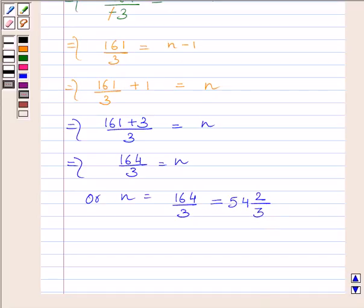Now clearly we can see value of n is not a natural number, so minus 150 is not a term of the given AP.